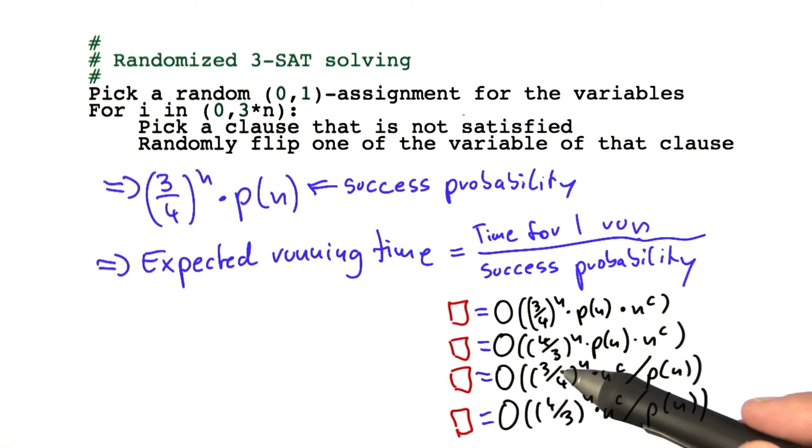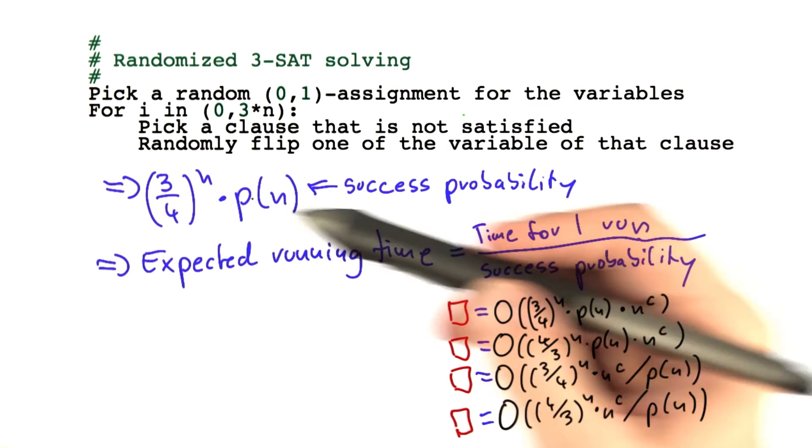Or is it O of three-quarters to the power of n times the polynomial for this algorithm divided by this polynomial here?